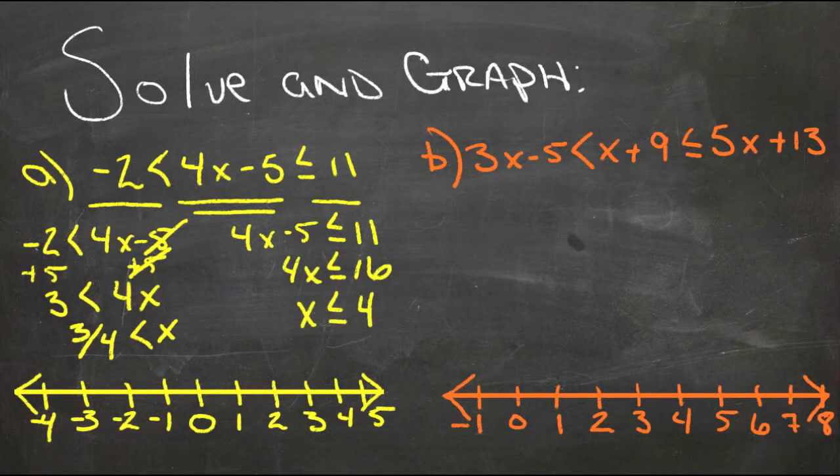So x is less than or equal to 4 and greater than 3 quarters. So it doesn't equal 3 quarters, but it comes close.